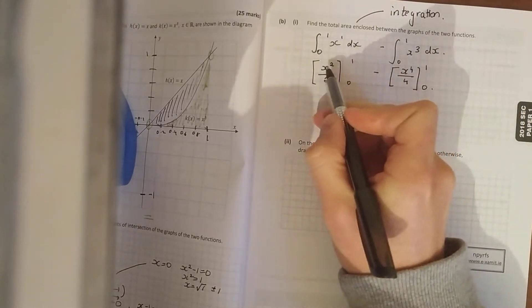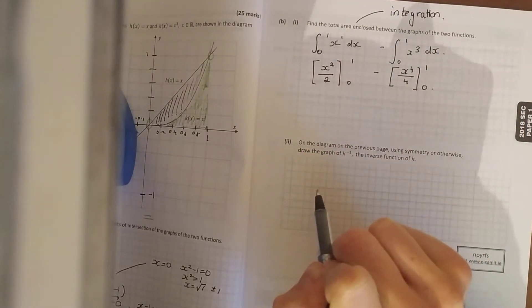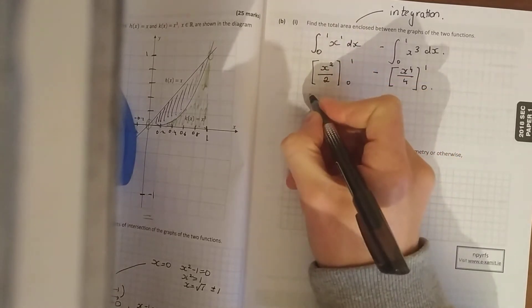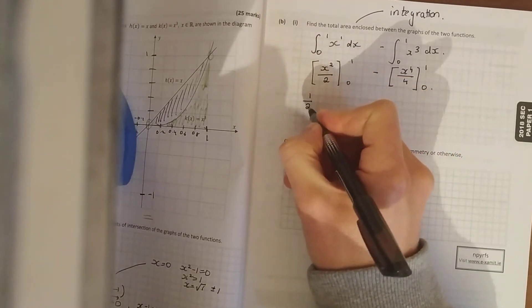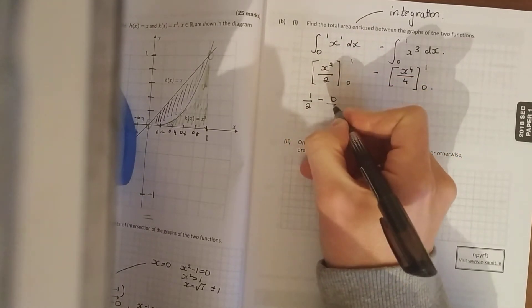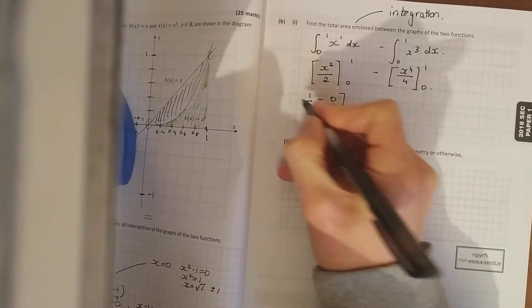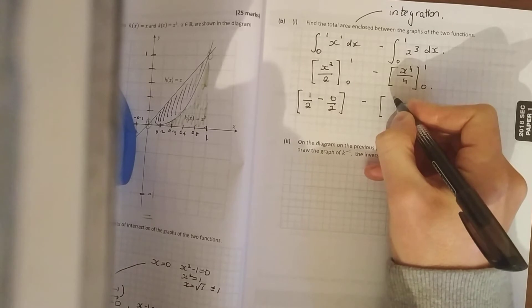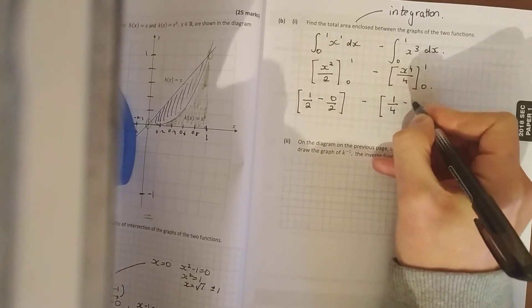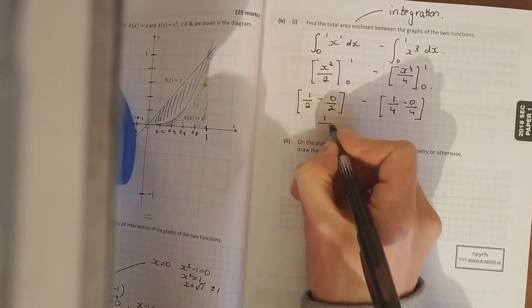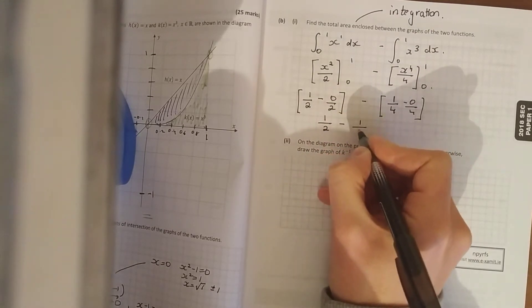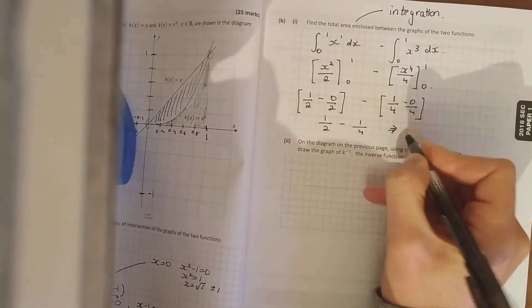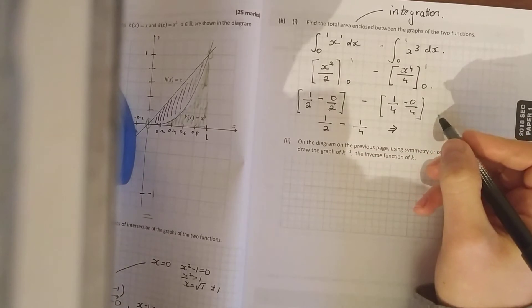And this one, increase the power by 1, divided by the new power, and again it's between the same limits. And what you do with these values is you horse them in for your x. So 1² over 2 is a half, minus 0 over 2 which is 0. And you take that all away from here: 1 to the power of 4 is 1, quarter minus 0 over 4.